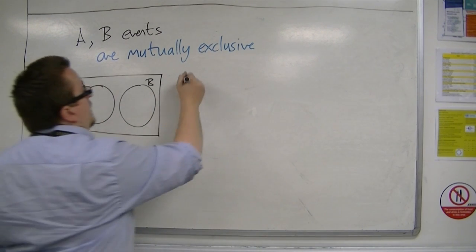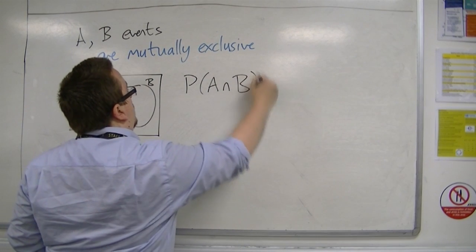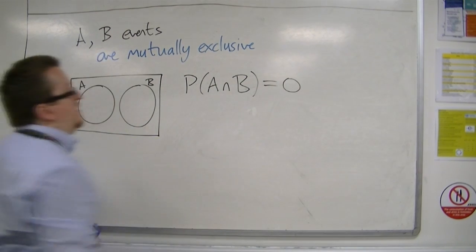So, subsequently, the intersection of A and B would be zero. There is no intersection.